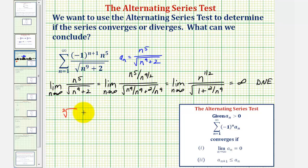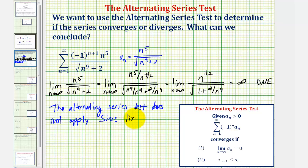Therefore, the alternating series test does not apply, and because this limit doesn't equal zero, we know the series diverges by the nth term divergence test. We could also say that the absolute value of the terms doesn't approach zero as n increases, and therefore the series diverges.